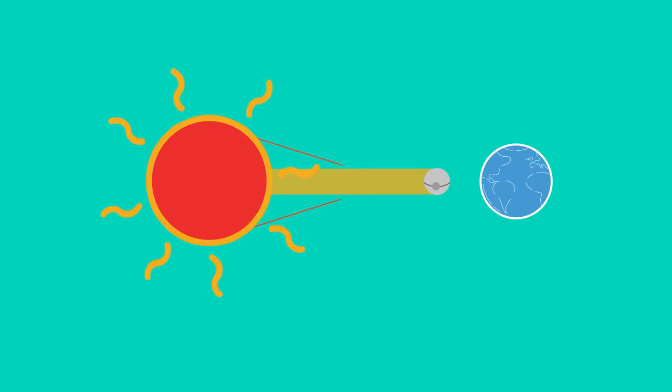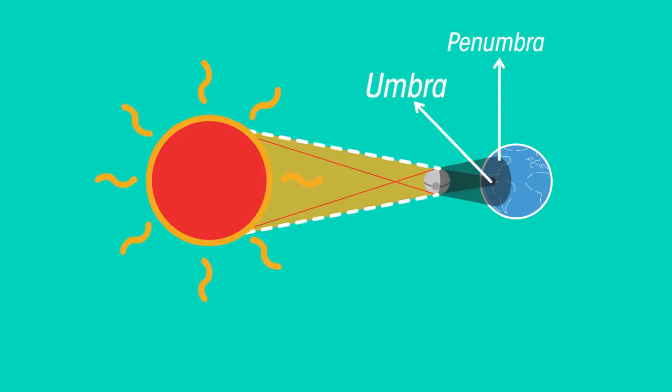As always the shadow has an umbra and the penumbra region. So if you are standing in the umbra, so on the part of the earth where the sun's light is totally blocked from reaching you, the sun will look like this in the sky.